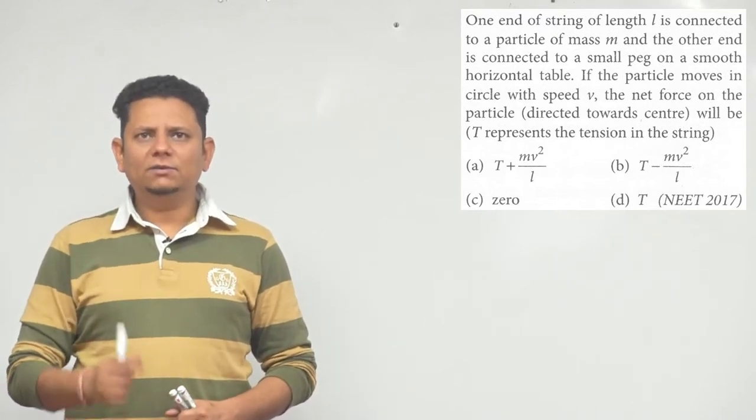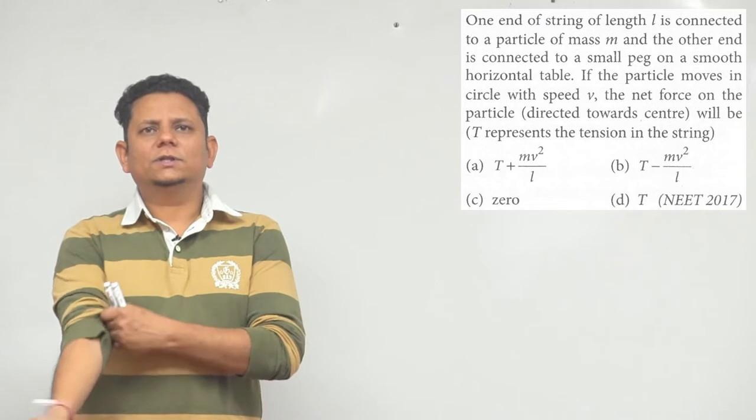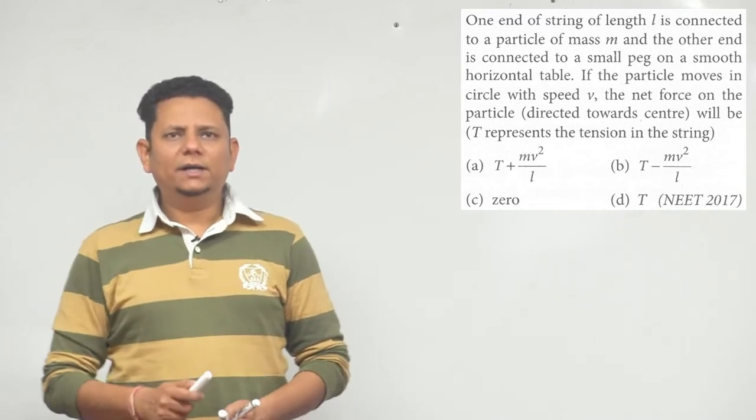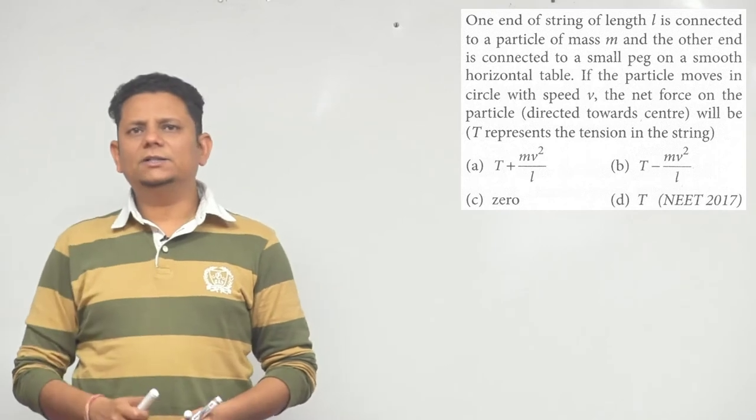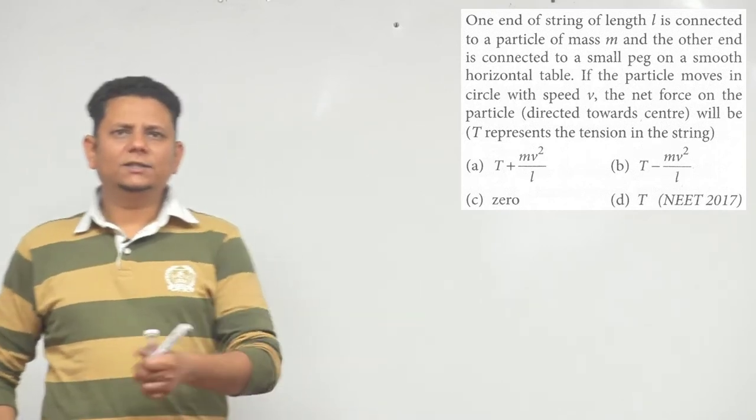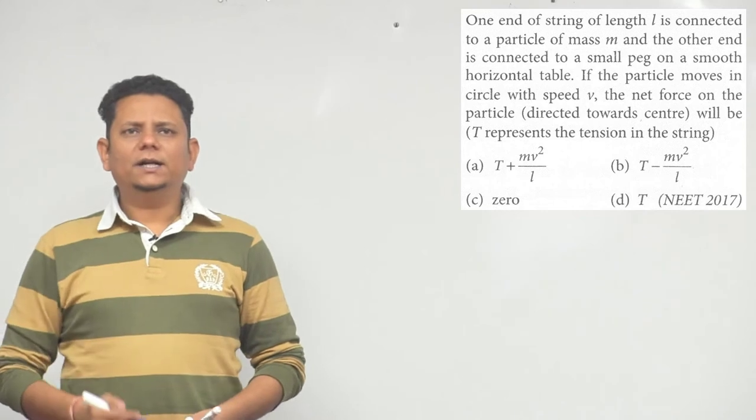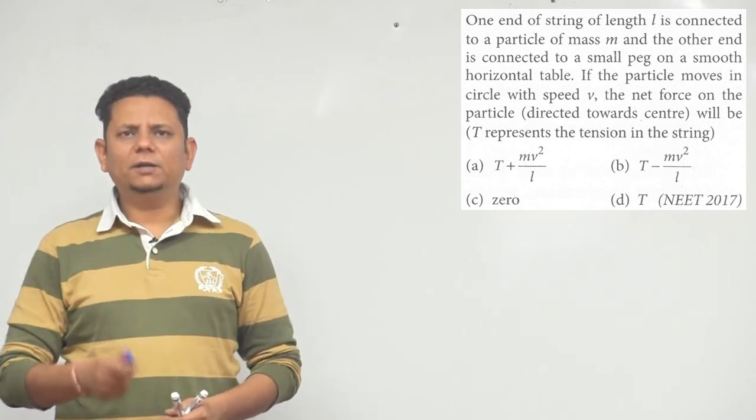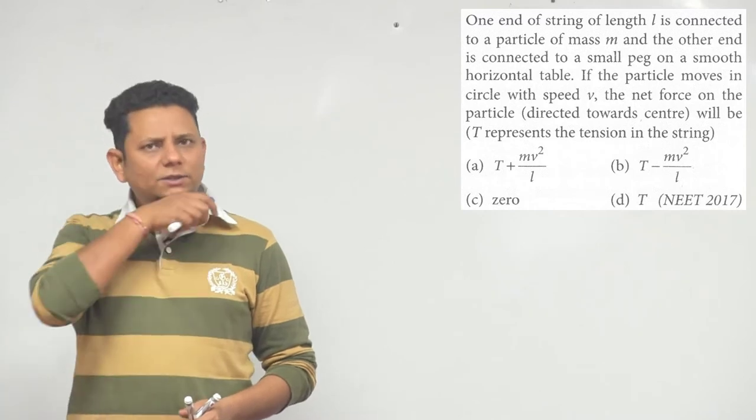If the particle moves in a circle with speed V, net force on the particle directed towards the center will be. Here T represents the tension in the string. This question has four options: Option A is T plus MV² by L, Option B is T minus MV² by L, Option C is zero, or Option D is T.